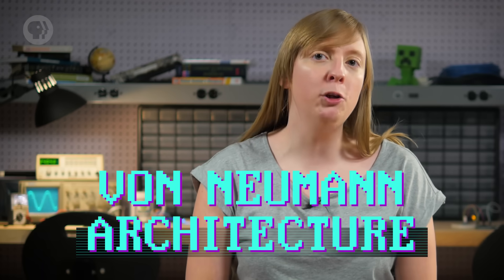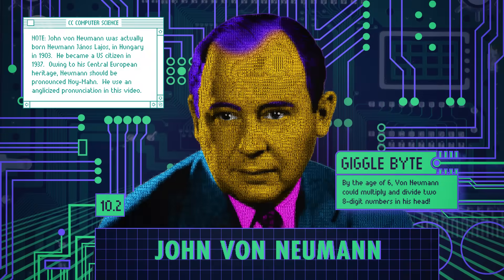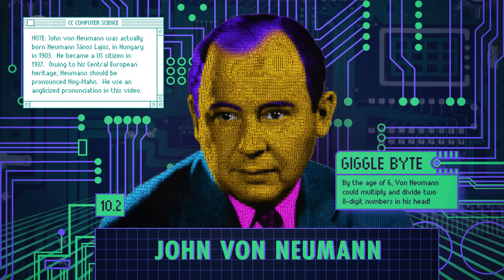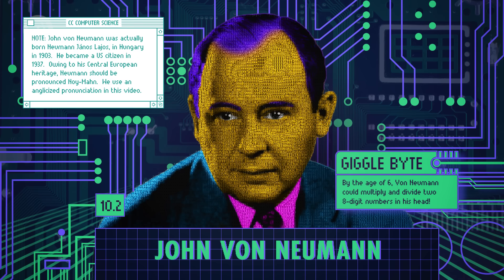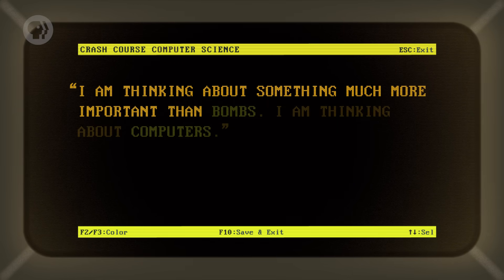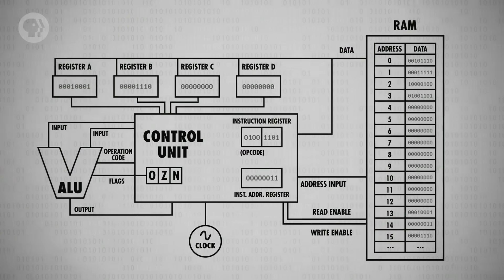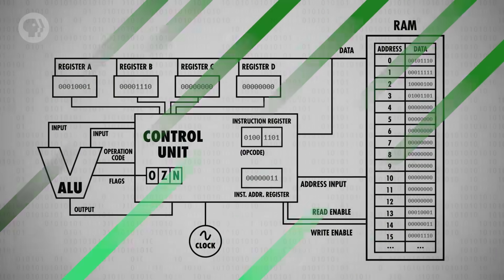Unifying the program and data into a single, shared memory is called the von Neumann architecture, named after John von Neumann, a prominent mathematician and physicist who worked on the Manhattan Project and several early electronic computers, and once said, 'I am thinking about something much more important than bombs, I'm thinking about computers.' The hallmarks of a von Neumann computer are a processing unit containing an arithmetic logic unit, data registers, an instruction register, and instruction address register, and a memory to store both data and instructions. We actually built a von Neumann computer in Episode 7.